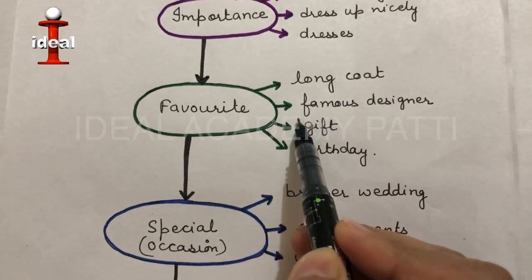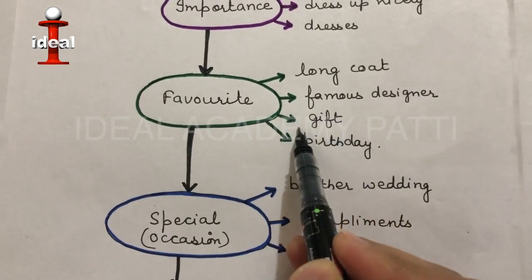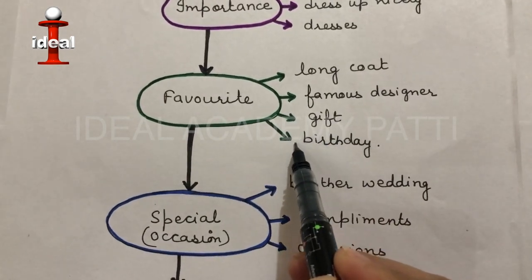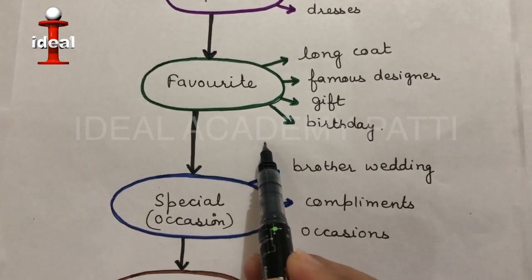It is a beautiful coat in black color made by famous designer Ritu Kumar. My parents bought this special dress from Delhi on my last birthday. It is knee length coat which is in fashion these days.